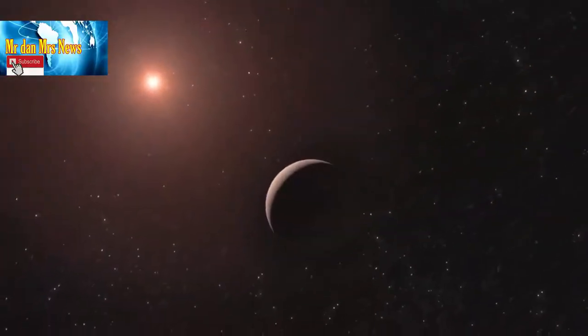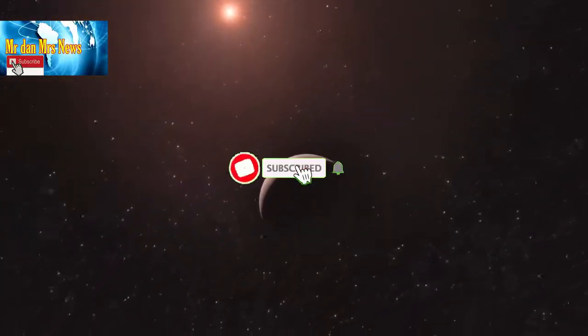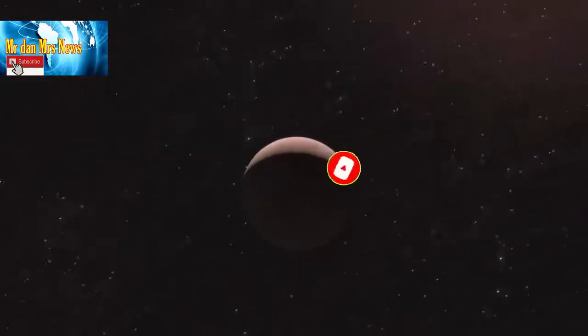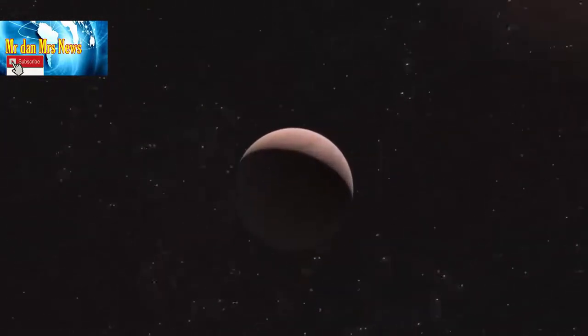Diperkirakan ada hingga lima planet yang mengorbit di sekitarnya, termasuk planet samudera, planet yang berbeda seluruhnya, dan salah satu eksoplanet yang paling ringan pernah ditemukan.